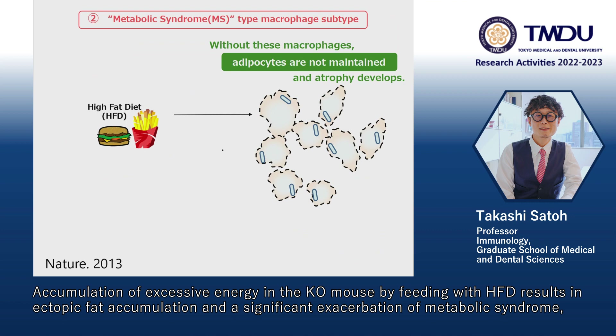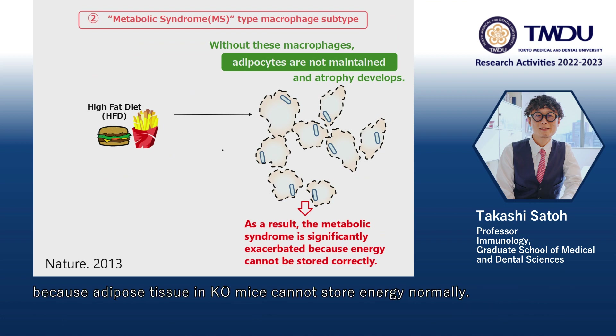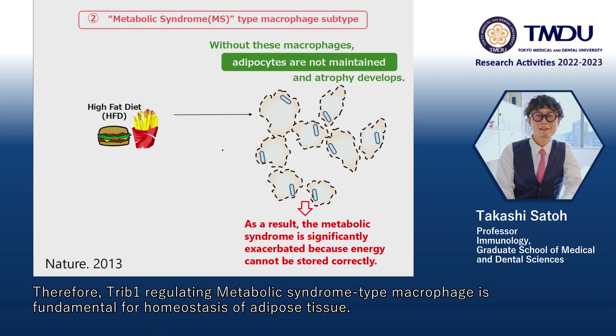Accumulation of excessive energy in the knockout mice by feeding with a high-fat diet results in ectopic fat accumulation and a significant exacerbation of metabolic syndrome, because adipose tissue in knockout mice cannot store energy normally. Therefore, TRIB1-regulating macrophage subtypes are fundamental for homeostasis of adipose tissue.